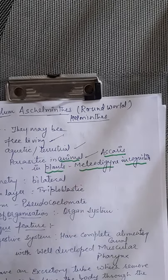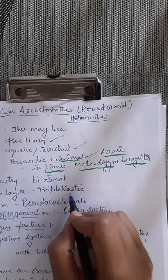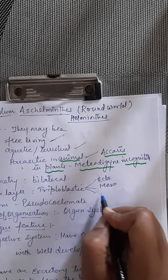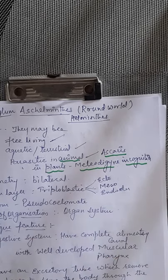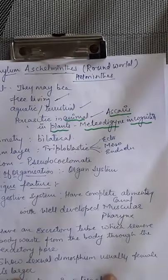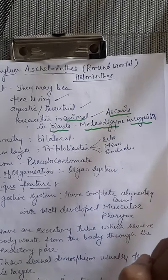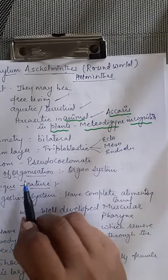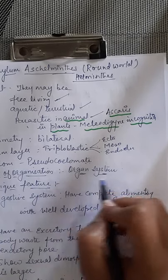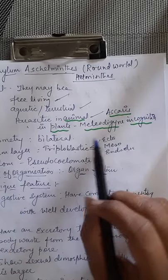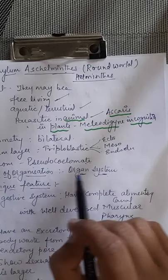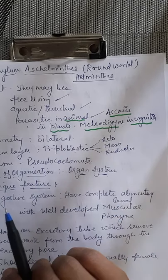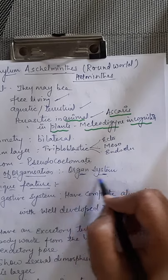Aschelminthes show bilateral symmetry and are triploblastic, with three germinal layers: ectoderm, mesoderm, and endoderm. The coelom is pseudocoelomate — mesodermal pouches get pinched off but a true cavity doesn't form. They have organ system level of organization, meaning a complete digestive system, excretory system, and nervous system are present.